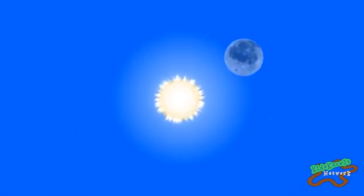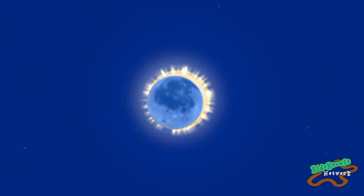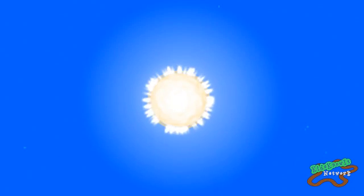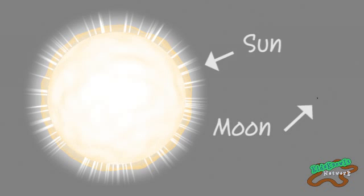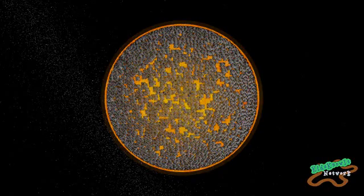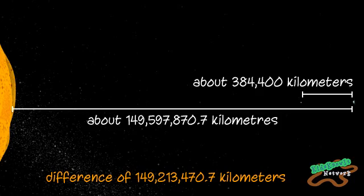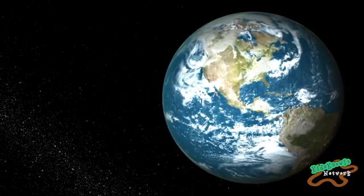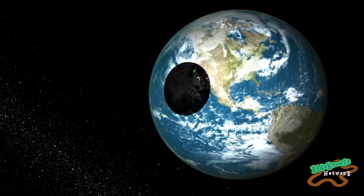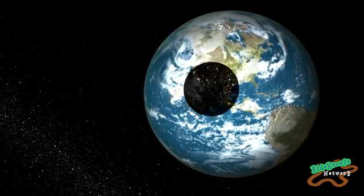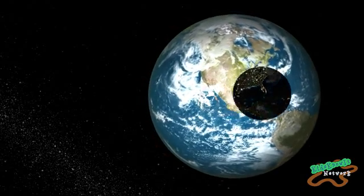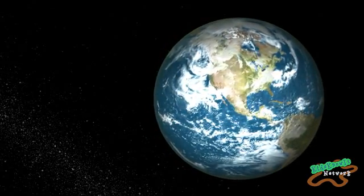A solar eclipse occurs when all or some of our view of the sun is blocked by the moon. The moon is much smaller than the sun — if the sun were hollow, over three million moons could fit inside of it. However, because the sun is much further away from us, the sun and moon appear to be exactly the same size to our eyes. Because they appear to be the same size, the moon is able to completely cover up our view of the sun. This happens when the moon passes between the Earth and the sun.